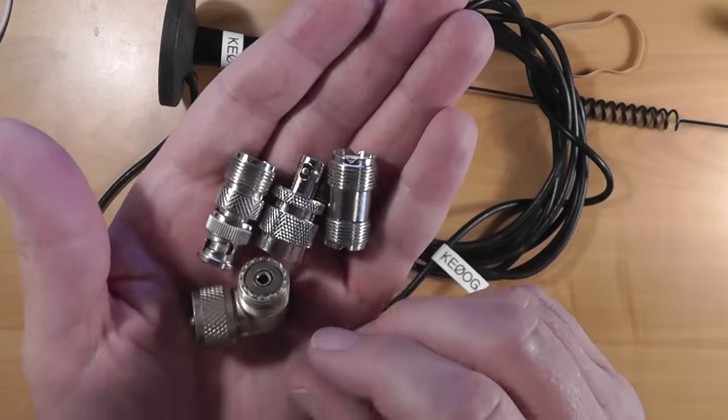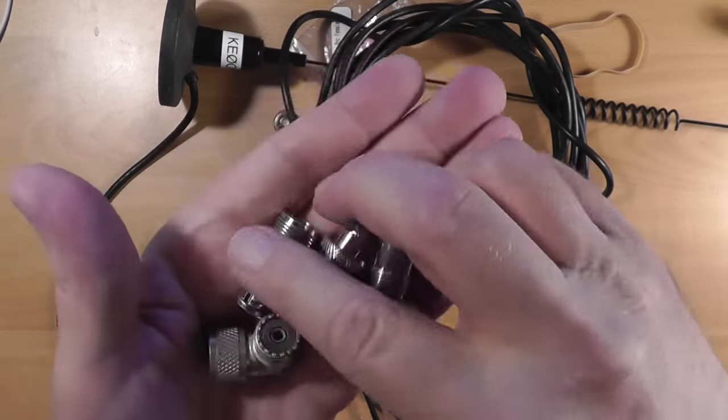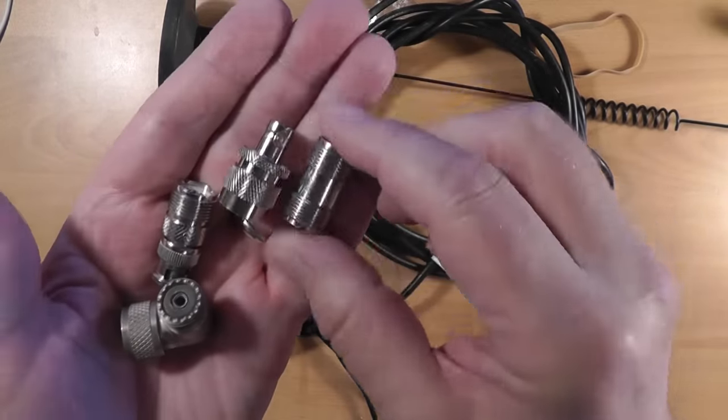You see fewer and fewer BNC connectors in ham radio, although, as I mentioned, they're used extensively outside ham radio. One of the problems is that nearly all mag-mount antennas, as well as other styles of commercially-built antennas, use PL259 or SO239 connectors these days. So, what is a ham to do? Well, enter the world of adapters.